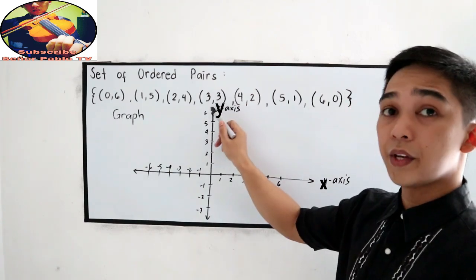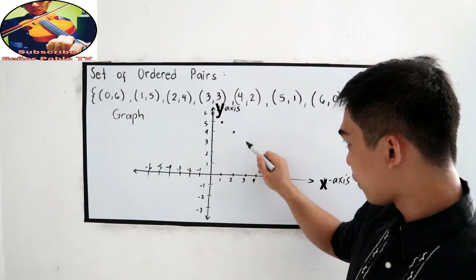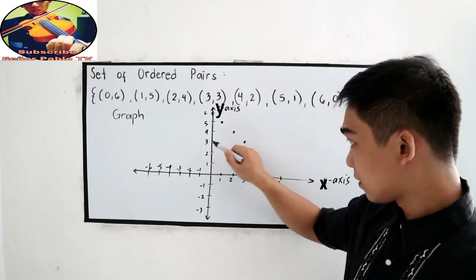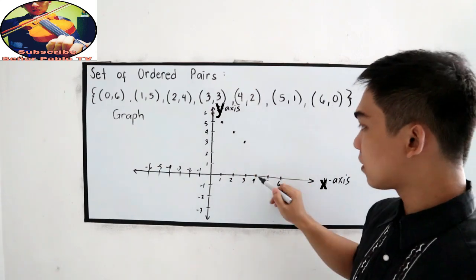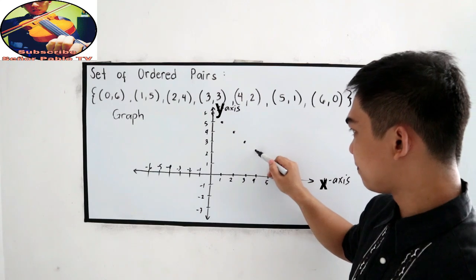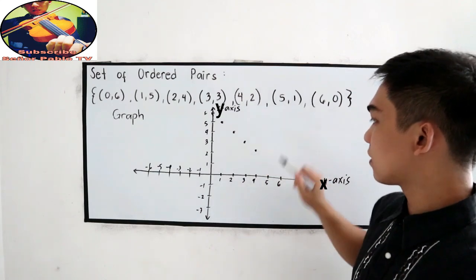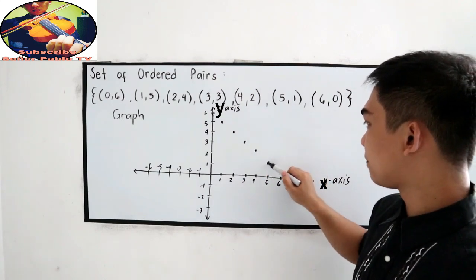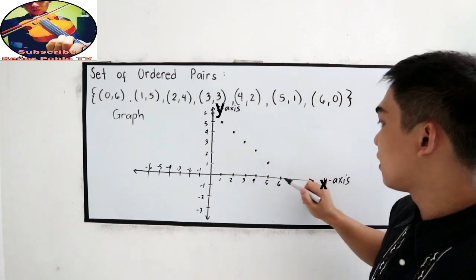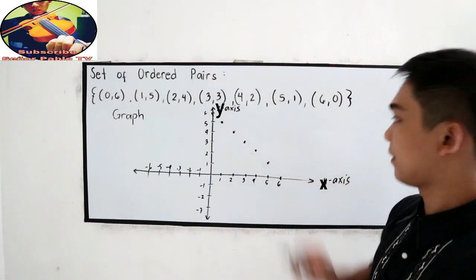Next, 3,3, 3 going up to 3. Next, 4,2. Next, 5,1. At last, 6,0. X is 6 and Y is 0.